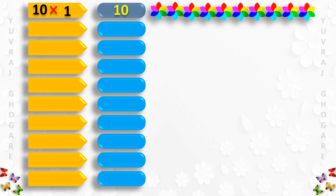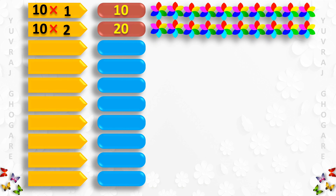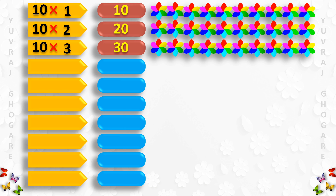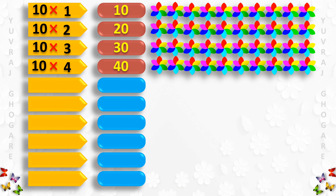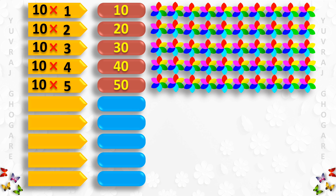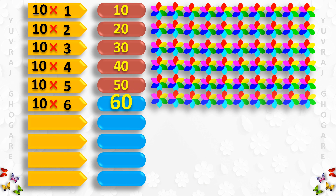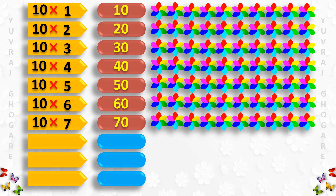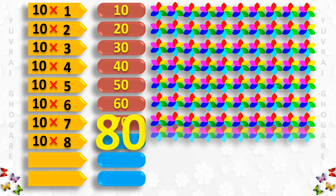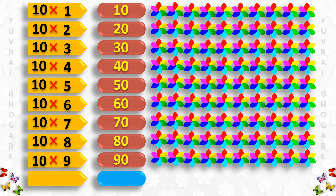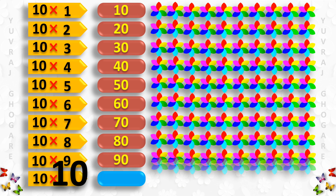Table of 10: 10 1s are 10, 10 2s are 20, 10 3s are 30, 10 4s are 40, 10 5s are 50, 10 6s are 60, 10 7s are 70, 10 8s are 80, 10 9s are 90, 10 10s are 100.